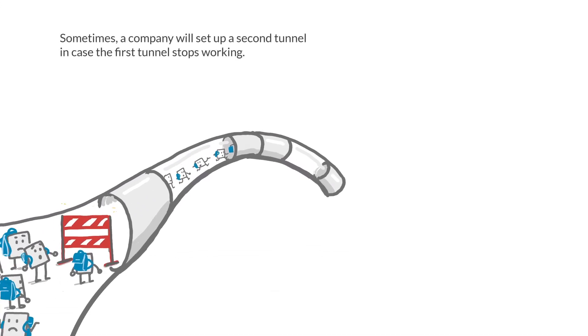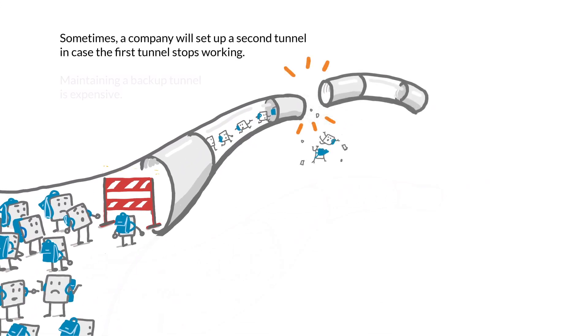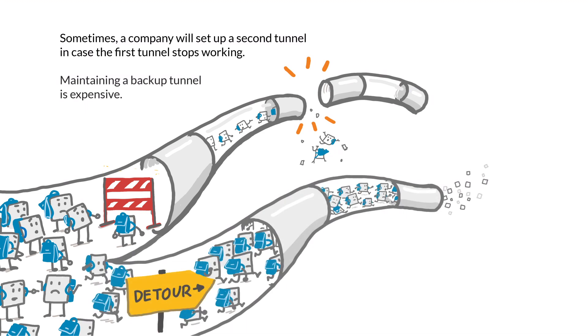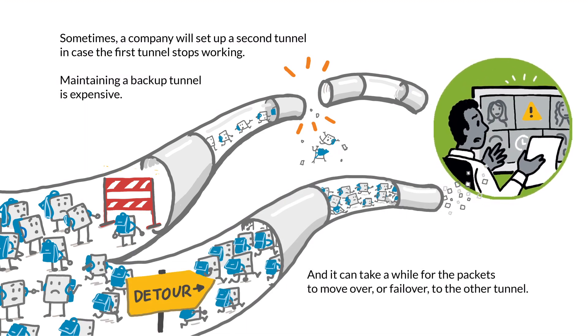Sometimes a company will set up a second tunnel in case the first tunnel stops working. Maintaining a backup tunnel is expensive, and it can take a while for the packets to move over, or fail over, to the other tunnel.